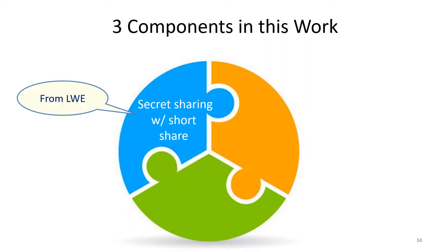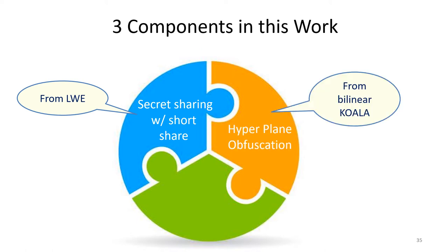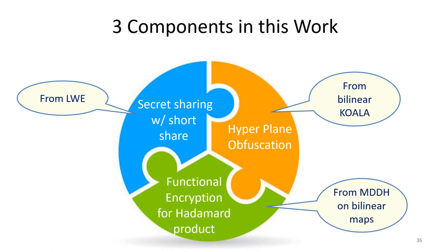The first ingredient is a secret sharing scheme with a certain succinctness condition on the size of shares. This secret sharing scheme can be constructed from LWE. The second ingredient is hyperplane obfuscation, constructed using bilinear maps and proven secure under the bilinear KOALA assumption. The third ingredient is functional encryption for the Hadamard product, which can be constructed using bilinear maps and proven secure under standard assumptions such as the matrix DDH assumption.